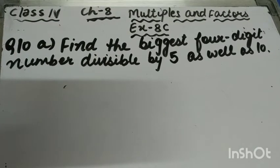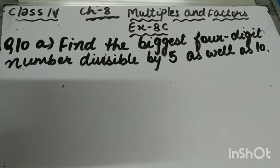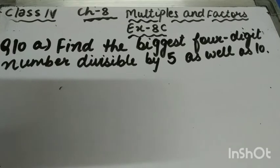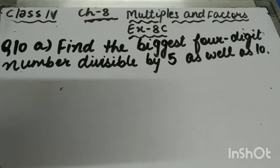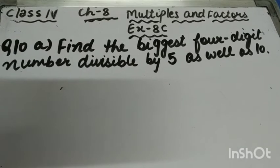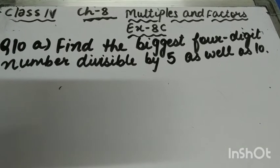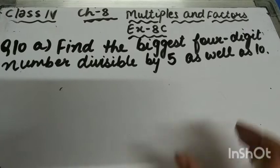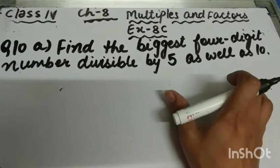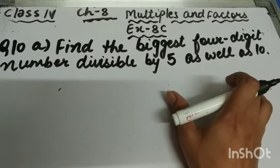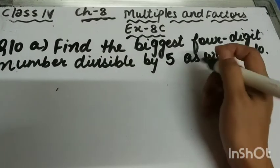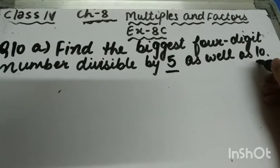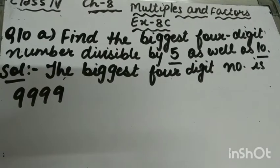Let's start question number 10, part A of exercise 8C. The question is: find the biggest 4-digit number divisible by 5 as well as 10.